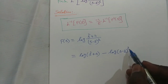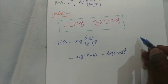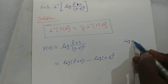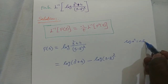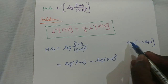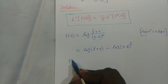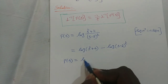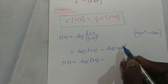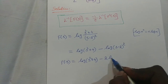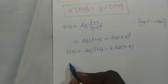Next, we apply the power rule for logarithms: log(mⁿ) can be written as n·log(m). Using that formula, F(s) becomes log(s² + 4) minus 2·log(s − 2). Now I am going to differentiate.